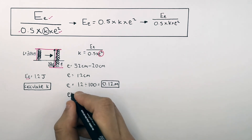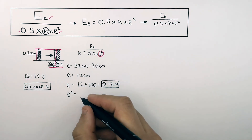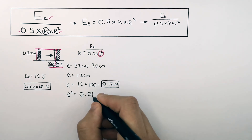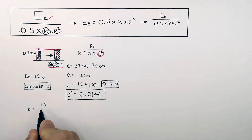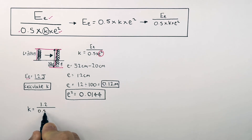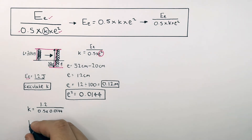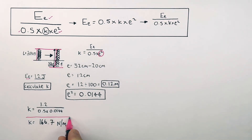But remember, the formula wants e squared. So e squared equals 0.12 times 0.12, so e squared equals 0.0144. So the spring constant k equals 1.2 joules divided by 0.5 times e squared, which is 0.0144. So spring constant k equals 166.7 newtons per metre.